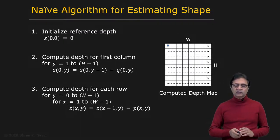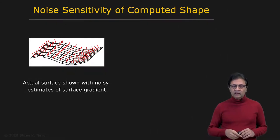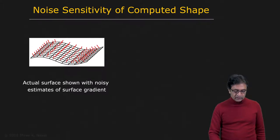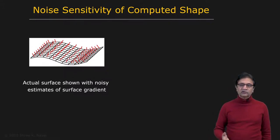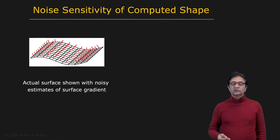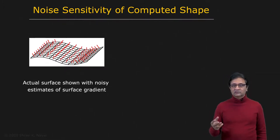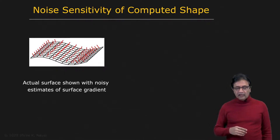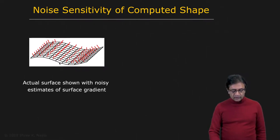Unfortunately, we have noise. If you apply photometric stereo to a surface, you may get surface normals where two patches that should have the same normal end up with different normals. This noise can arise from camera noise in the measured image intensities, or from biases due to reflectance assumptions that are not exactly accurate.